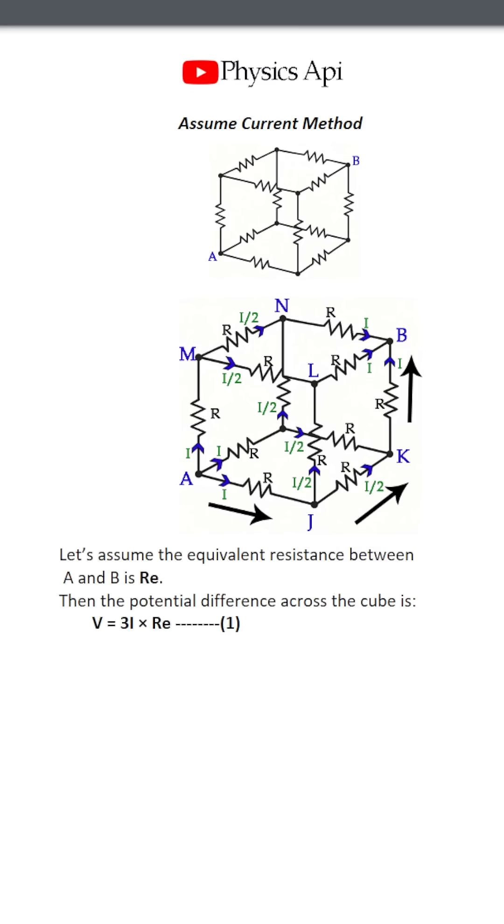Let's assume the equivalent resistance between A and B is RE. Then the potential difference across the cube is V equals 3I times RE, because the total current is 3I.